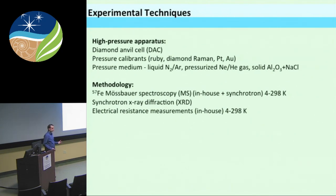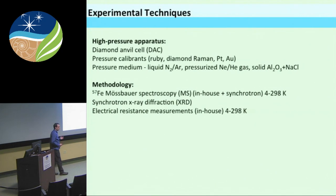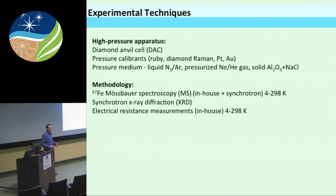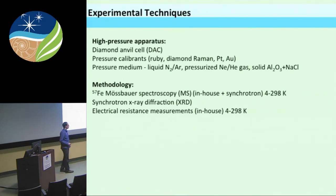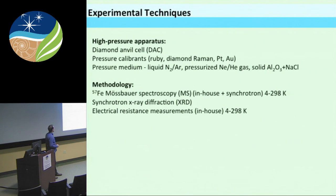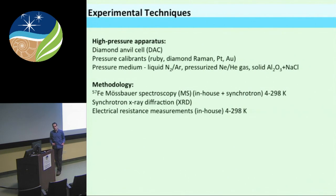We want to know which case applies for each sample, whether all the iron in the system undergoes the transition, and how this relates to the crystal structure. The experimental technique I used is the diamond anvil cell for applying pressure. I used various pressure calibrants depending on the measurement, and for the pressure medium we aimed for good hydrostatic conditions — pressurized neon or helium when possible, or cryogenic loading of nitrogen or argon. For resistance measurements, a solid pressure medium was necessary.